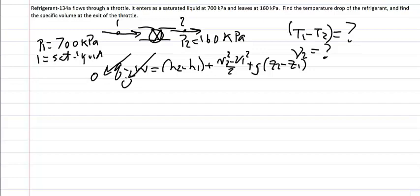With regards to the kinetic energy change, we know nothing about the pipe size at the inlet or at the exit from the throttle, so there's no way that we can find the velocity, nor do we know the mass flow rate. So our only choice is to simply assume that the kinetic energy change is zero.